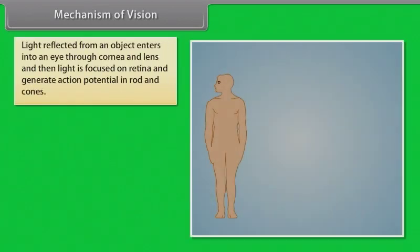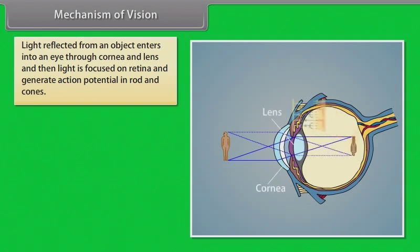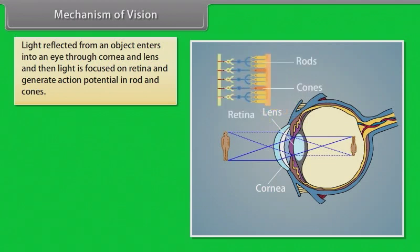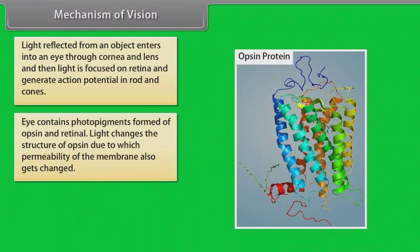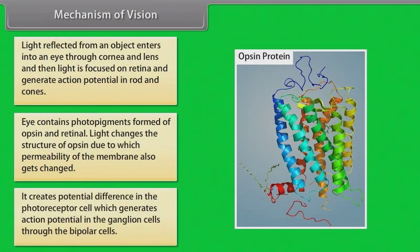Light reflected from an object enters the eye through the cornea and lens, and is then focused on the retina, generating action potentials in the rods and cones. The eye contains photopigments formed of opsin and retinal. Light changes the structure of opsin, due to which the permeability of the membrane also gets changed.